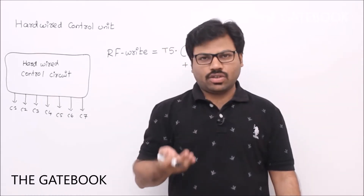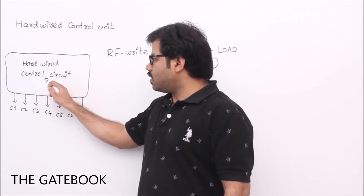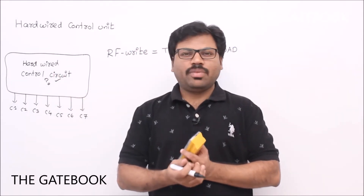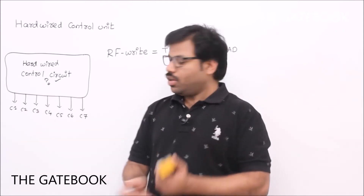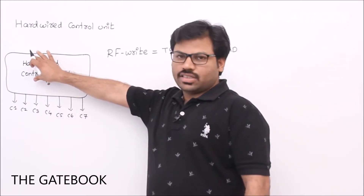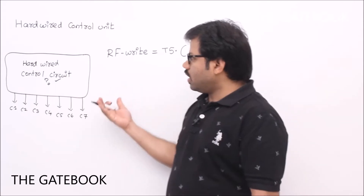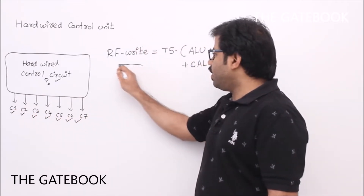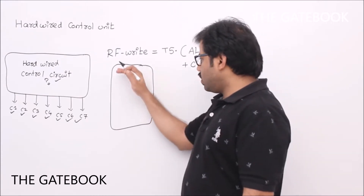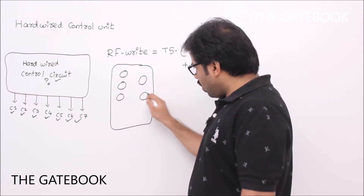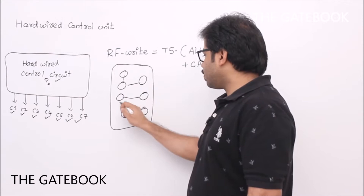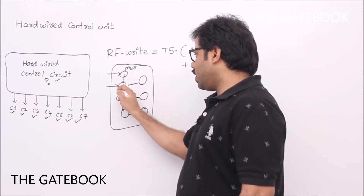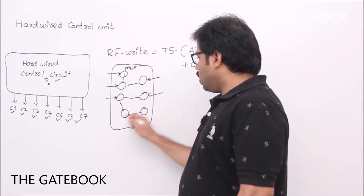Let us see a rough idea of how to generate control signals. This is your hardware control circuit. We will see how to design this hardware control circuit at a high level, because to create a complete circuit for a computer is a big deal — there will be hundreds of signals and hundreds of inputs. So we try to understand how to generally do that. This is your complete processor circuit, with various parts connected, and if it is a multiplexer, it requires some control signal.